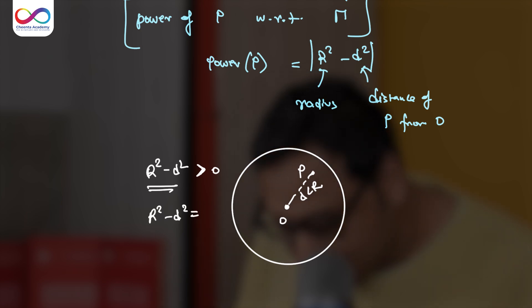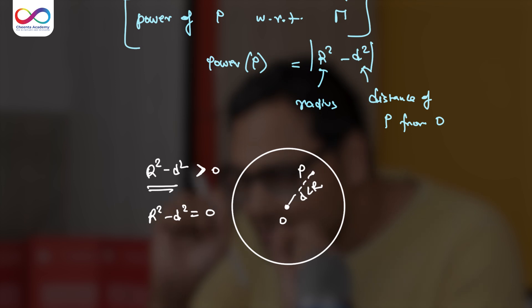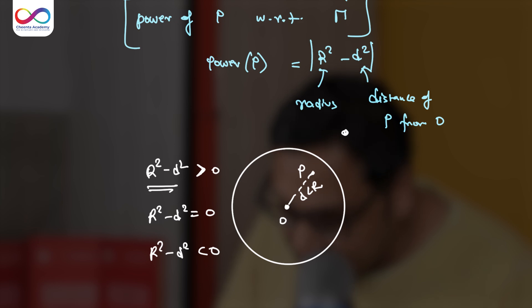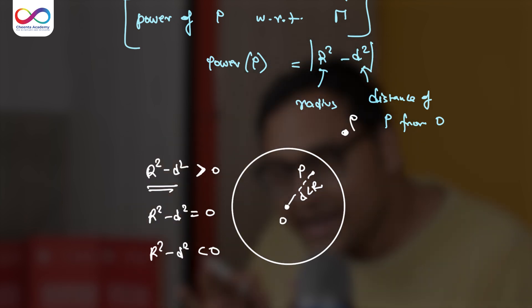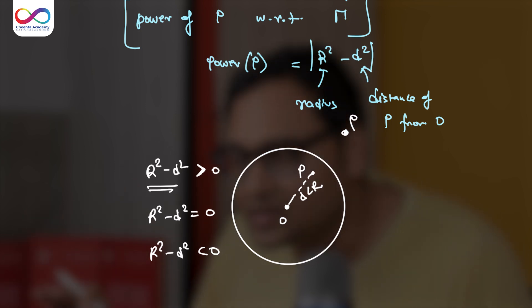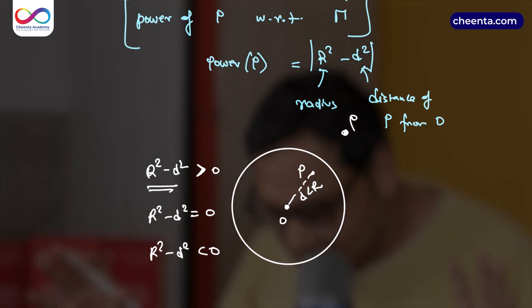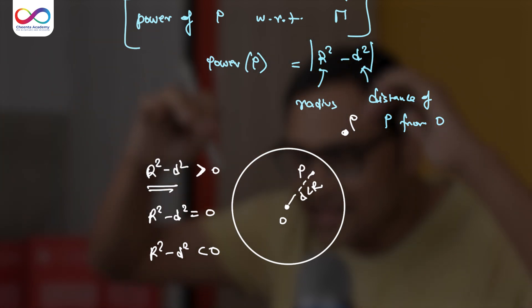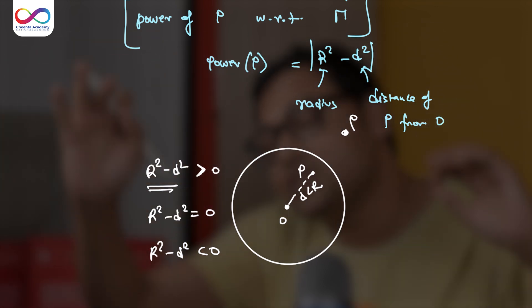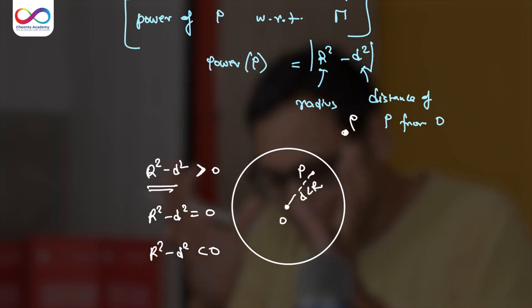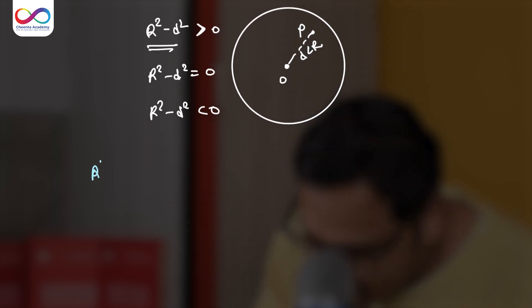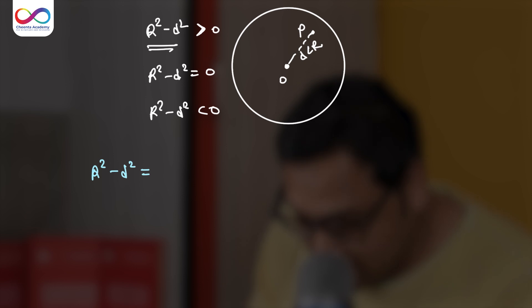R² minus D² will equal 0 if P is on the circumference. And R² minus D² will be less than 0 if P is outside. Then D will be larger than R, and it can go off to negative infinity because D can be very, very large. So what do we get? We get a sort of division of numbers between positive, negative and 0 with respect to the position of the point P and the circle gamma.